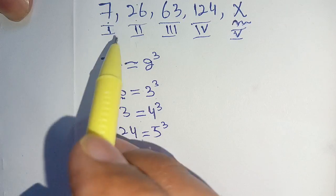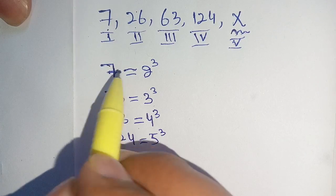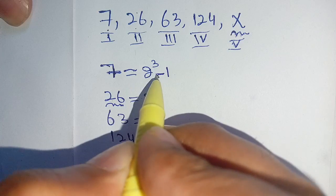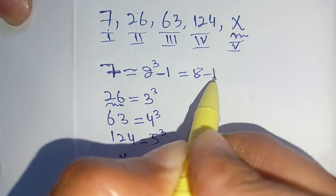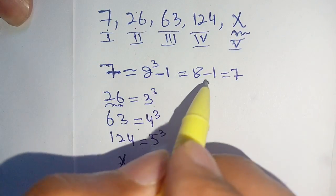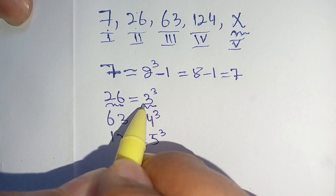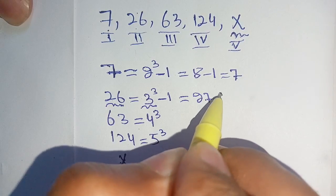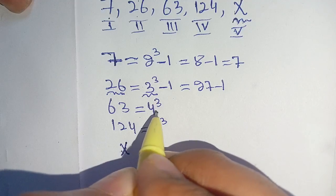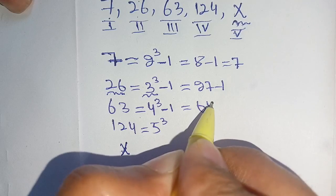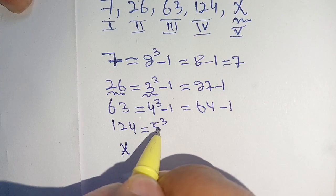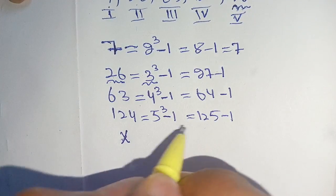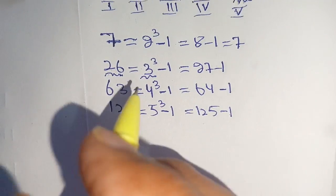But this doesn't give us a perfect relationship between these terms. Here 7 — our 2 cubed equals 8, which is not equal to 7. But when we subtract 1, meaning 2 cubed minus 1, that is 8 minus 1, it becomes 7 — the perfect first number. Same case with the second term: 3 cubed minus 1, so 27 minus 1 equals 26. Same with 4 cubed minus 1: 64 minus 1 equals 63. And 5 cubed minus 1: 125 minus 1 equals 124. This gives us a clear pattern.